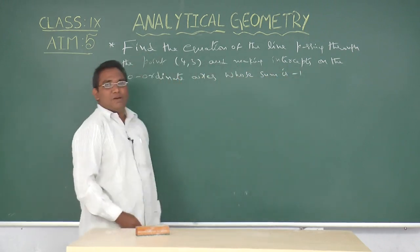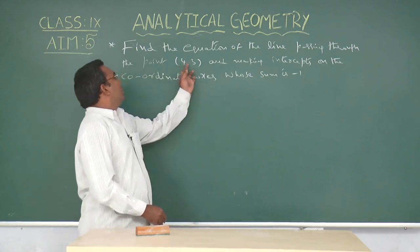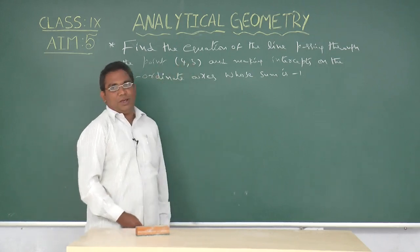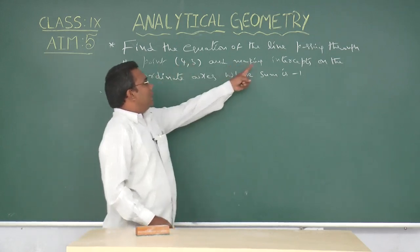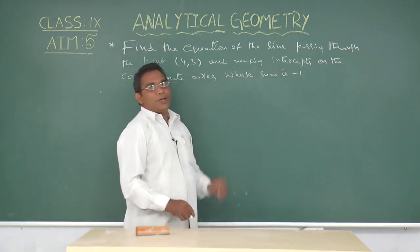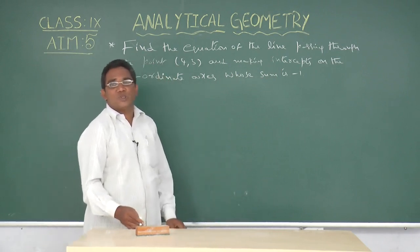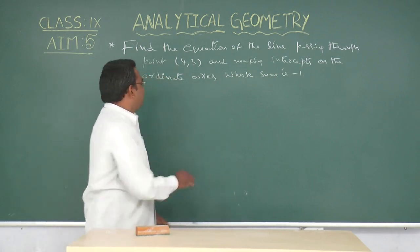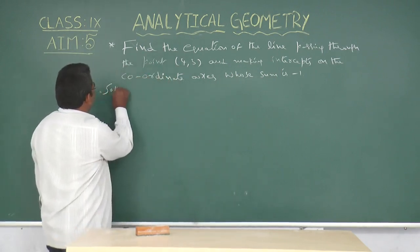We have to find the equation of the line passing through the given point (4, 3) and making intercepts on the coordinate axis whose sum is minus 1. Solution.